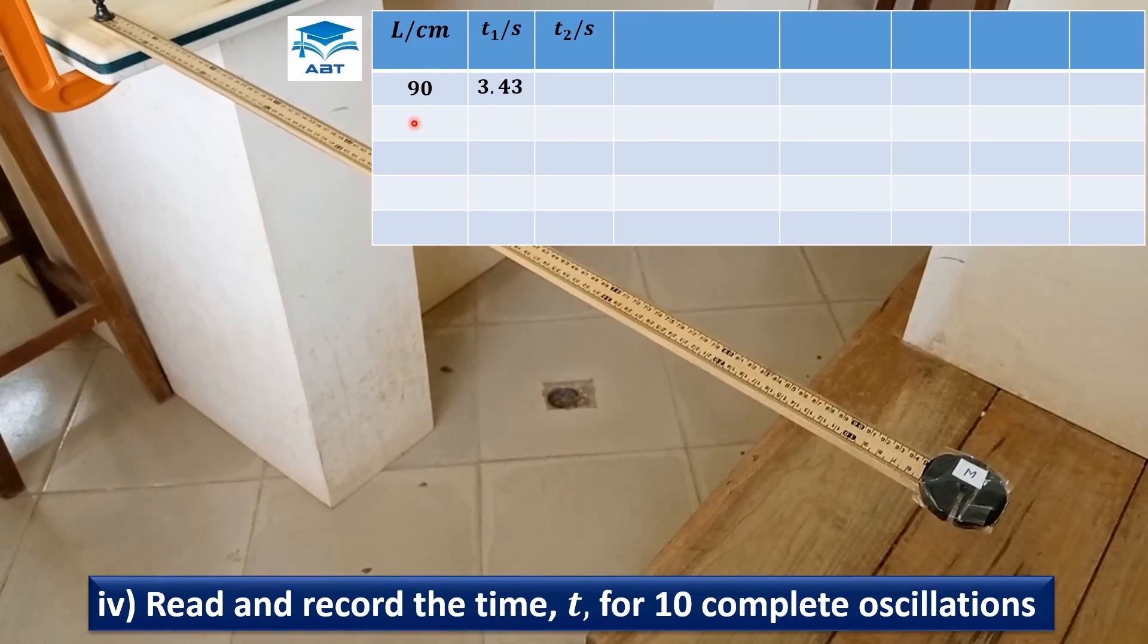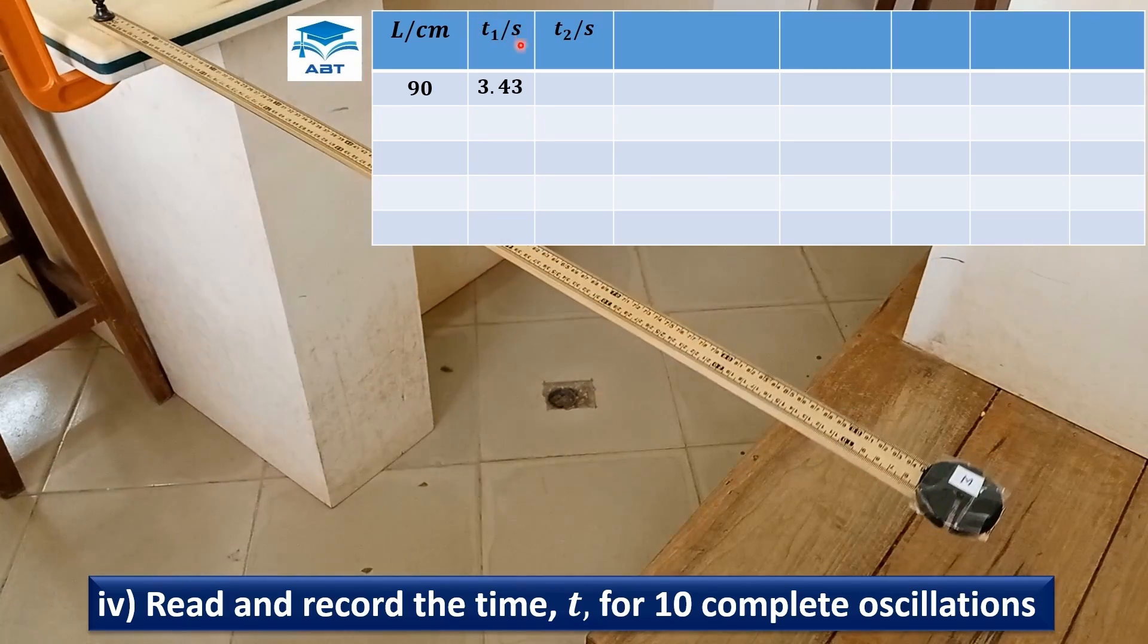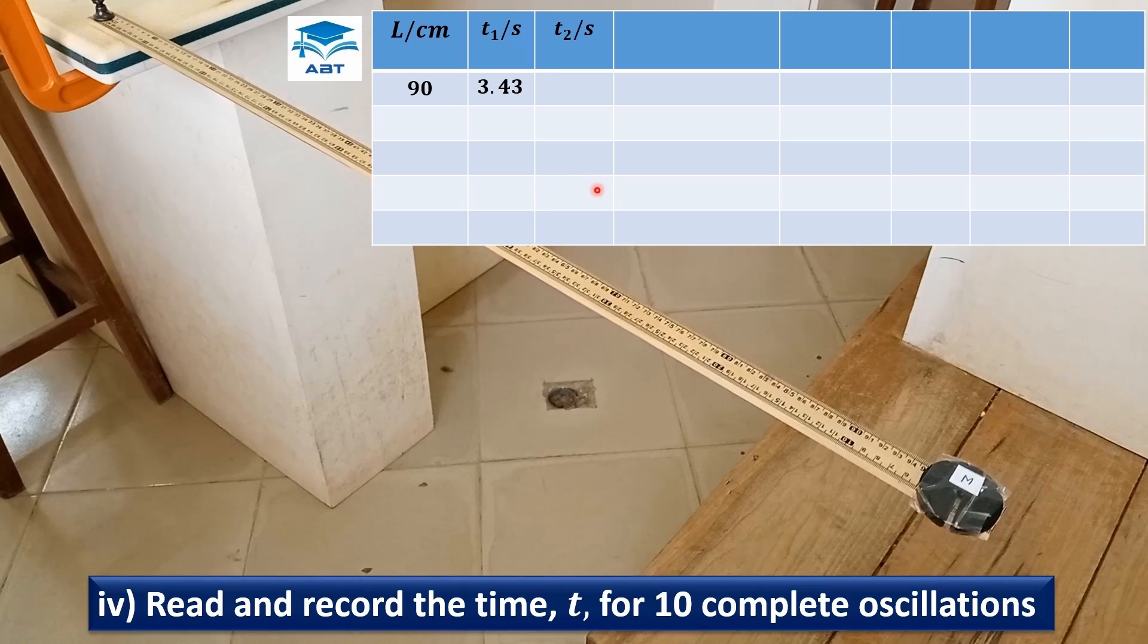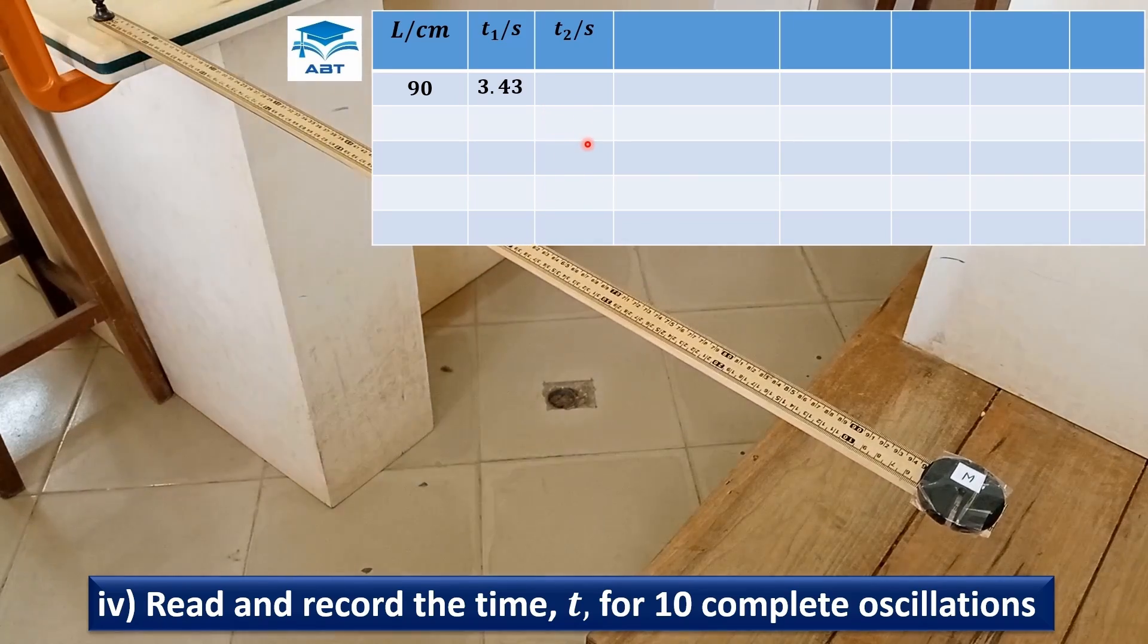The length is 90 cm and the time for 10 complete oscillations is 3.43 seconds. We are going to repeat the time again for more accurate results.